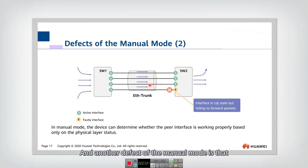And another defect of the manual mode is that because there is no message exchange automatically transmitted, so in manual mode, we need to determine the working state by ourselves. So sometimes, for example, here, if we check the state of this interface, and we find that the interface state is up. However, there has already been some failure, and it has already failed to forward packets.